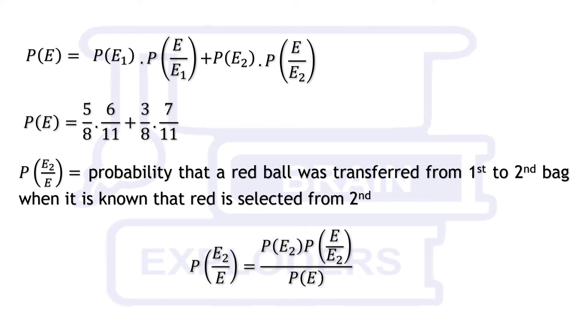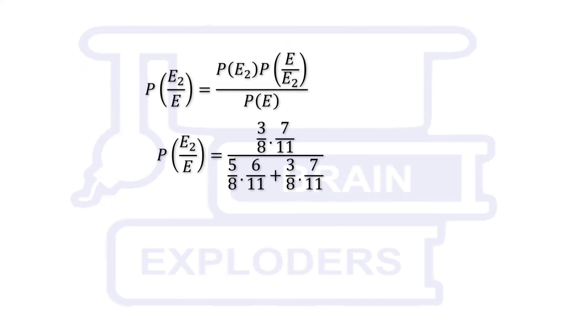This is equal to P(E2) times P(E|E2) upon P(E). On calculation we get required probability equals to 7 over 17.